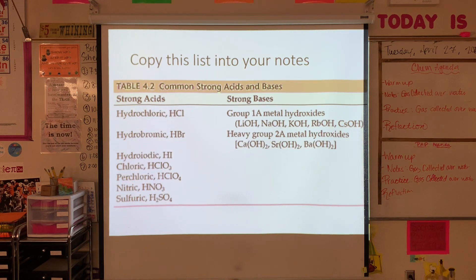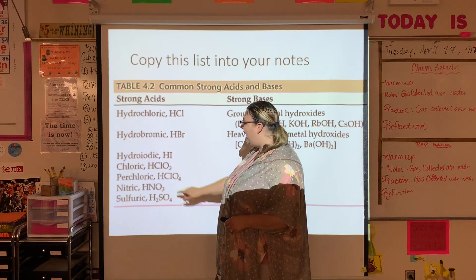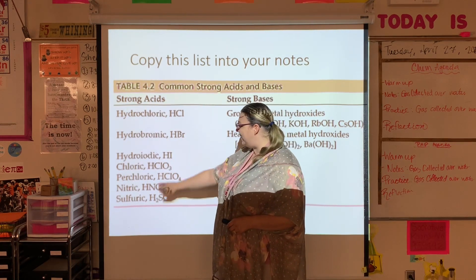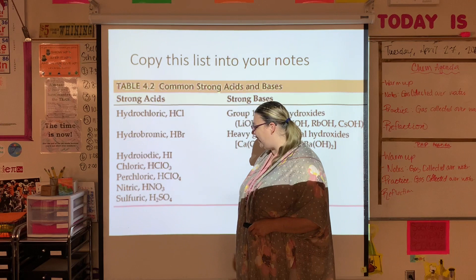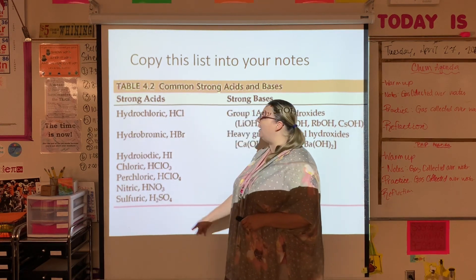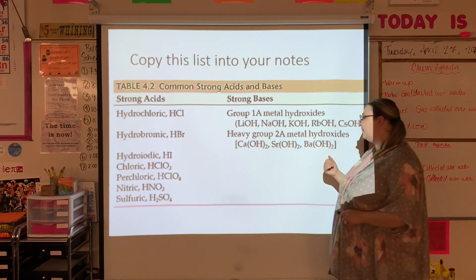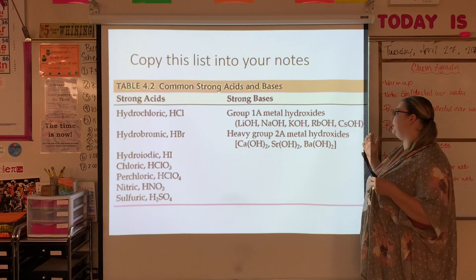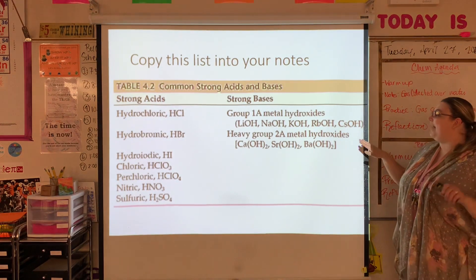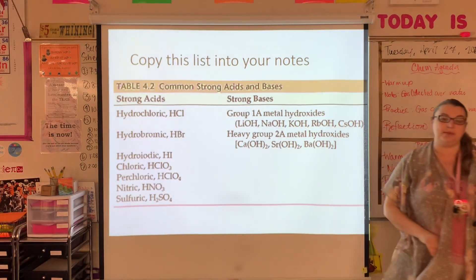Here is a list of strong acids and bases — not exhaustive, but a solid list. Strong acids: hydrochloric acid (HCl), hydrobromic acid (HBr), hydroiodic acid (HI), chloric acid (HClO₃), perchloric acid (HClO₄), nitric acid (HNO₃), and sulfuric acid (H₂SO₄). Strong bases include any group one metal hydroxide — sodium, lithium, potassium, rubidium hydroxide — and the heavier group two metal hydroxides: calcium hydroxide and barium hydroxide.